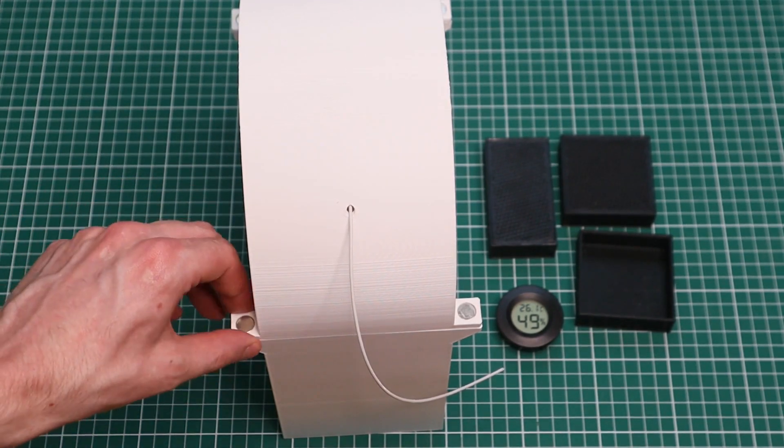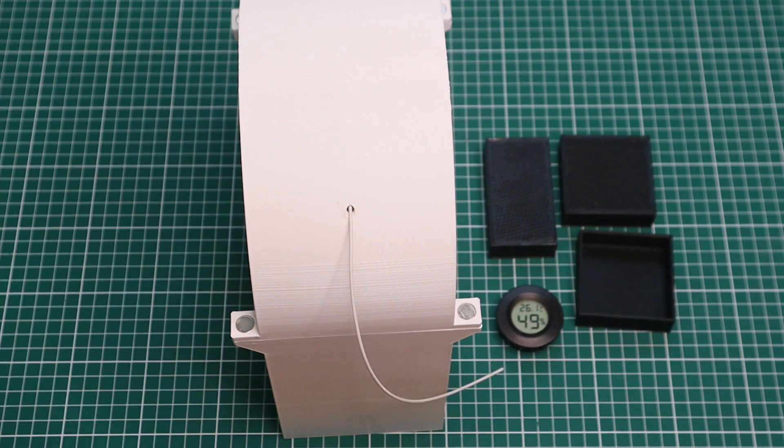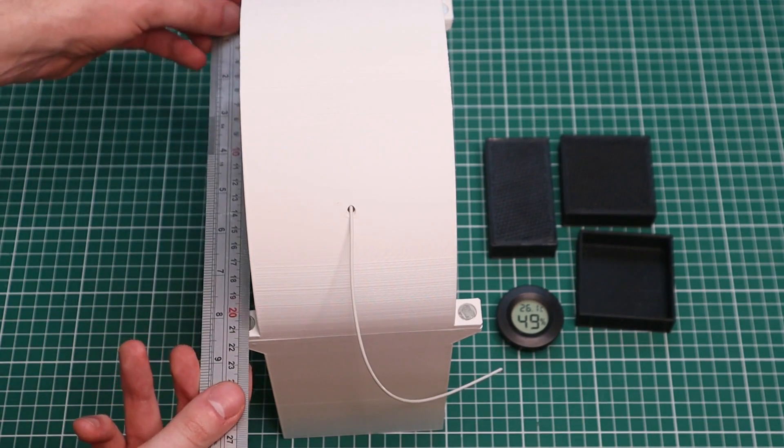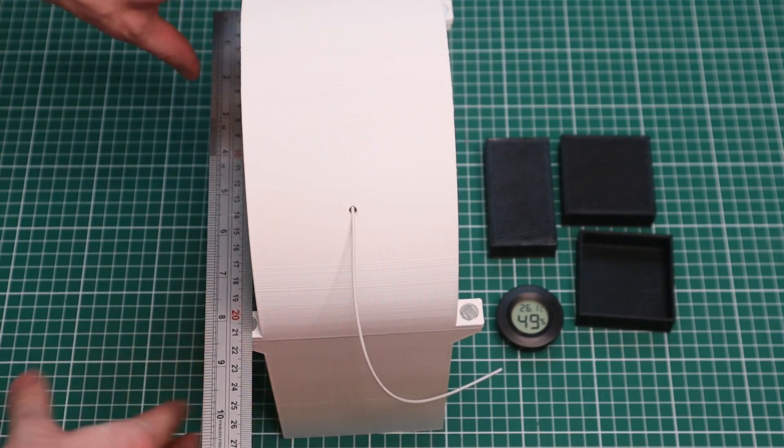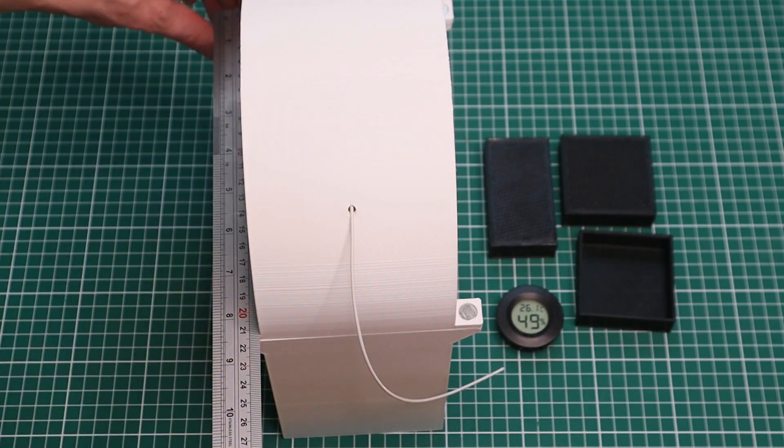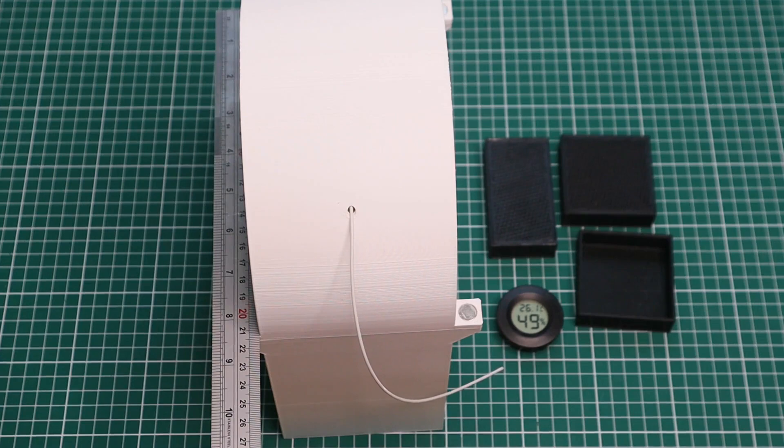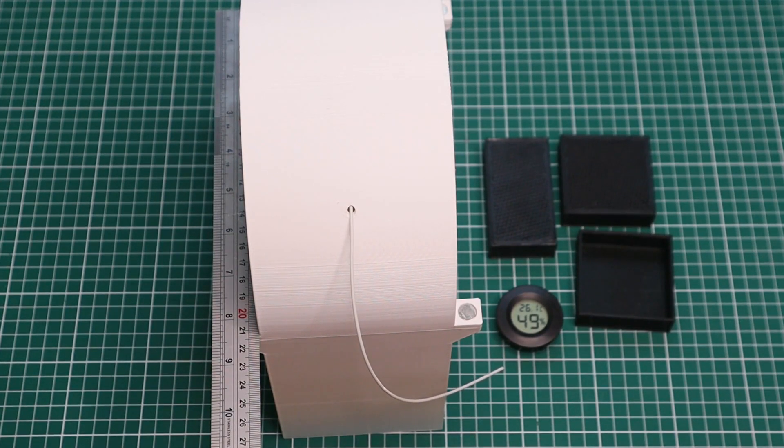Now at the moment, this thing is small enough to print on an Ender 3. So if I take a ruler like this real quick, you can see that the total length of this thing is about just under 22 centimeters. So that fits on the bed of an Ender 3, and I do hope I can keep it that way.